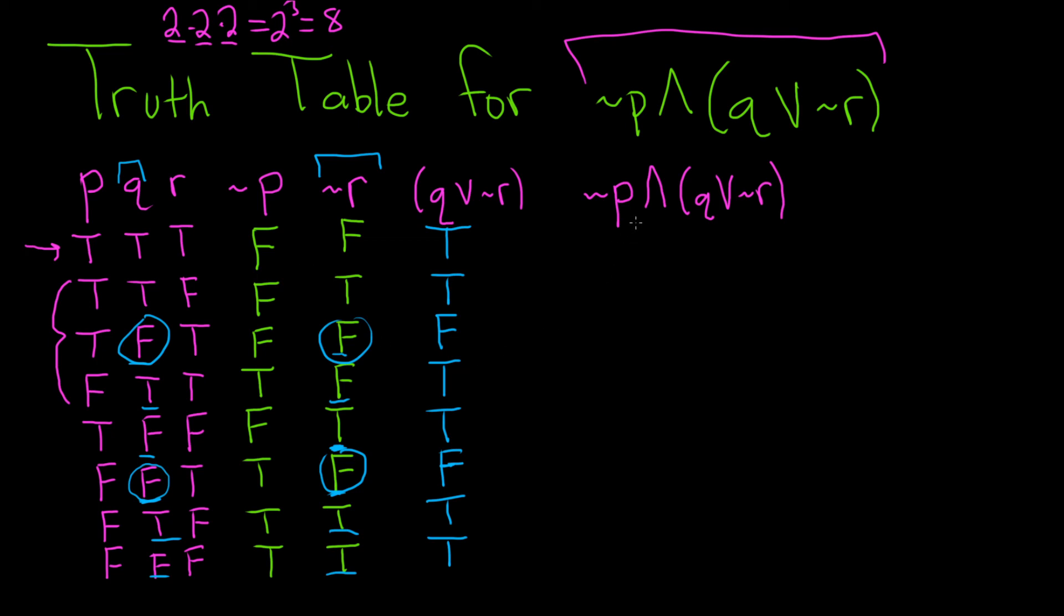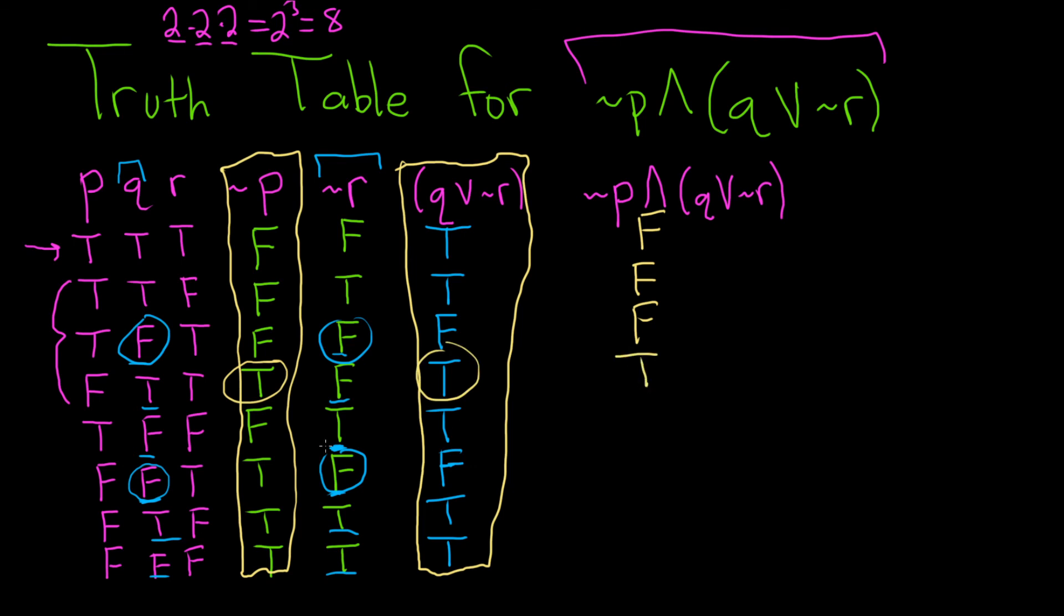The last case, we have to look at not P and (Q or not R). So this will only be true when they are both true. Otherwise, it's false. We're looking at not P and this expression here, these two columns. It'll only be true when both are true. If one of them is false, the whole thing is false. So here, right away, we see that not P is false, so it's false. Not P is false, so it's false. They're both false, so it's definitely false. Oh, look at this - true and true, so they're both true, so it's true. We get some falseness, so false, false. Both true, true. And at the end again, both true, true.